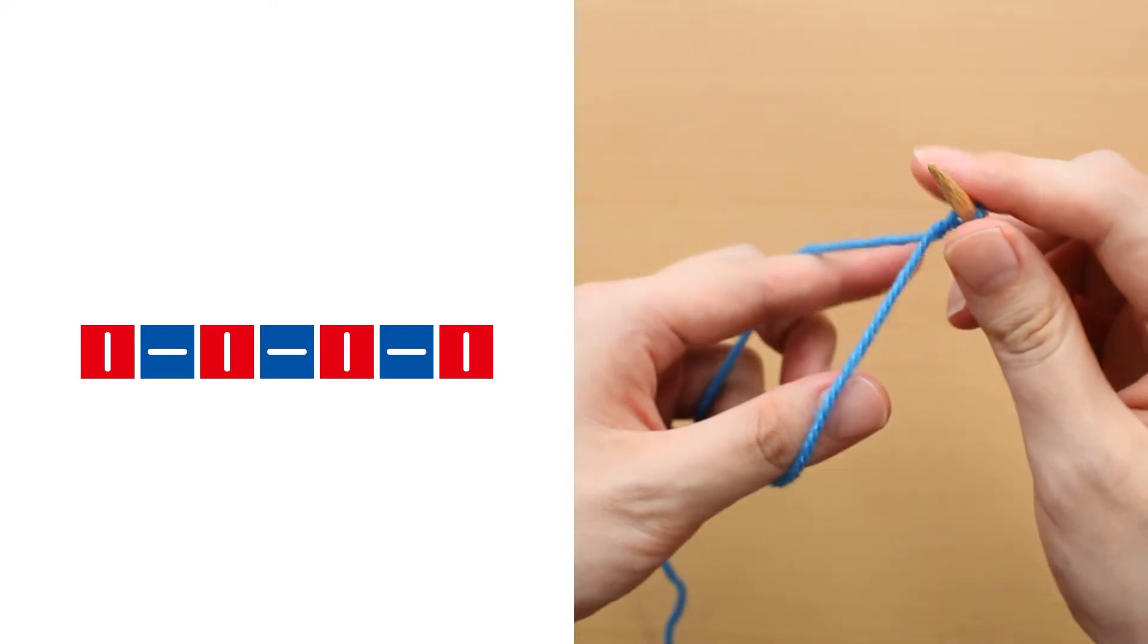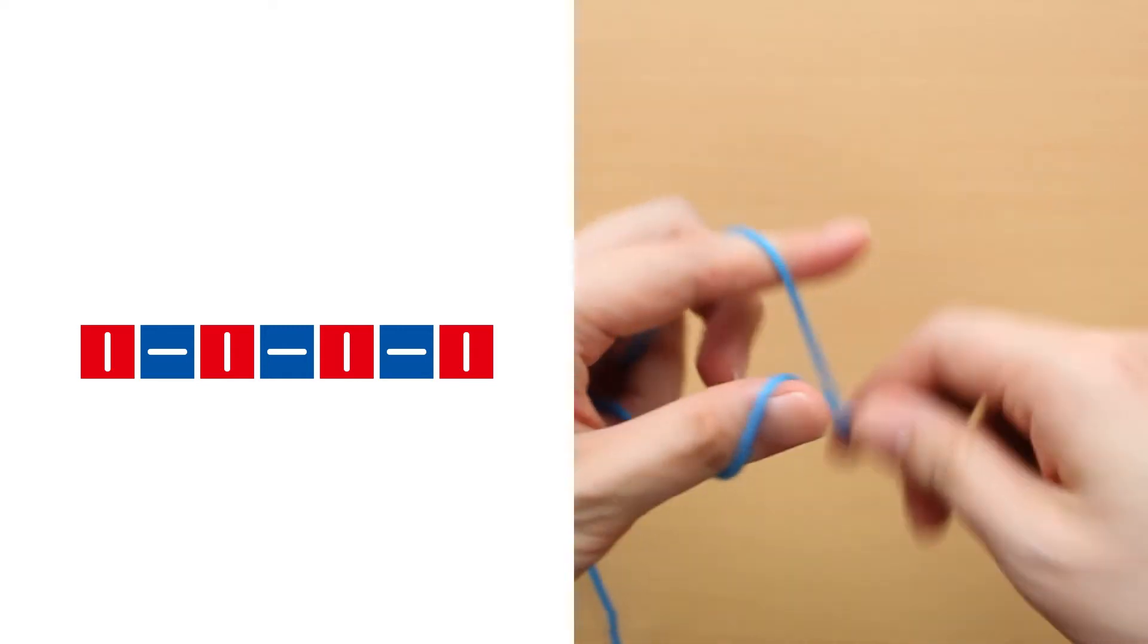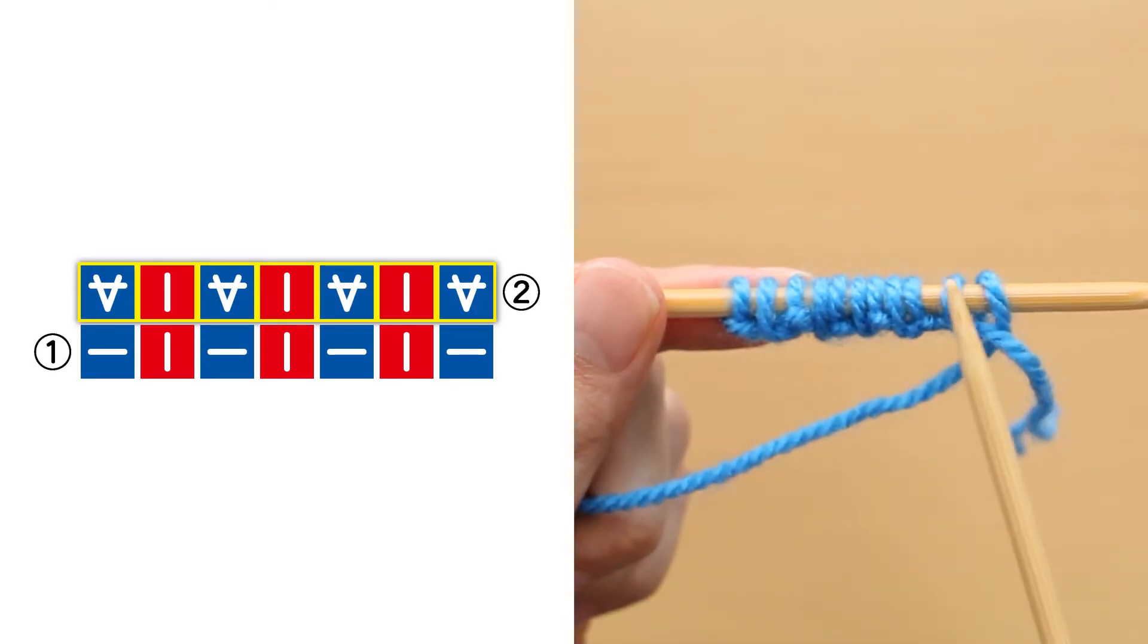When making a 1 by 1 rib cast-on with 1 knit stitch on both ends, hook the needle with your finger and then do double knitting for only 1 row.